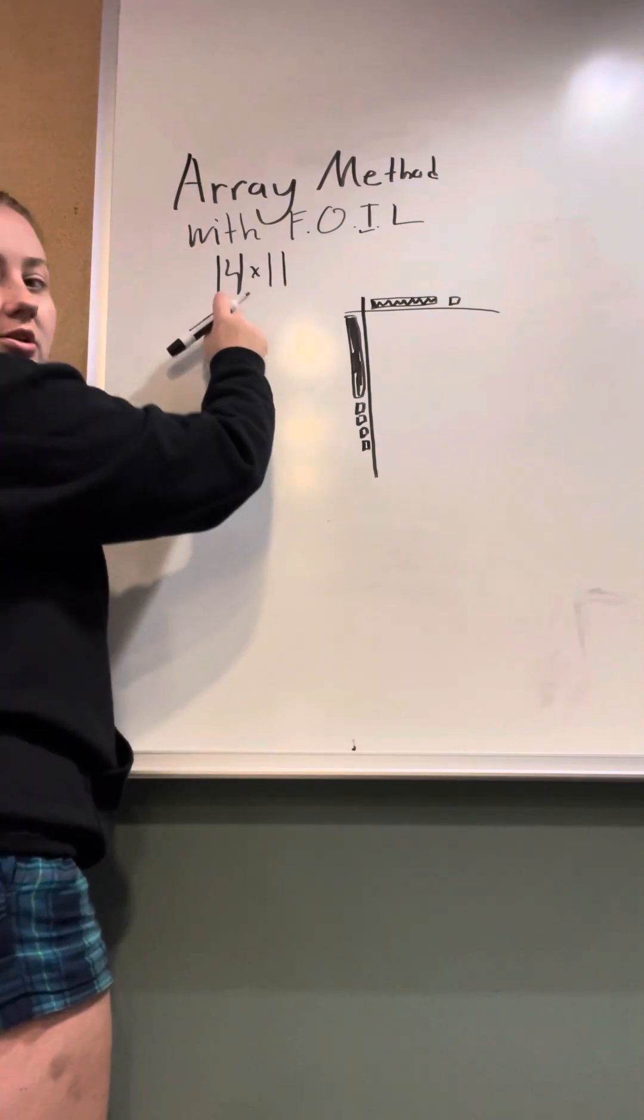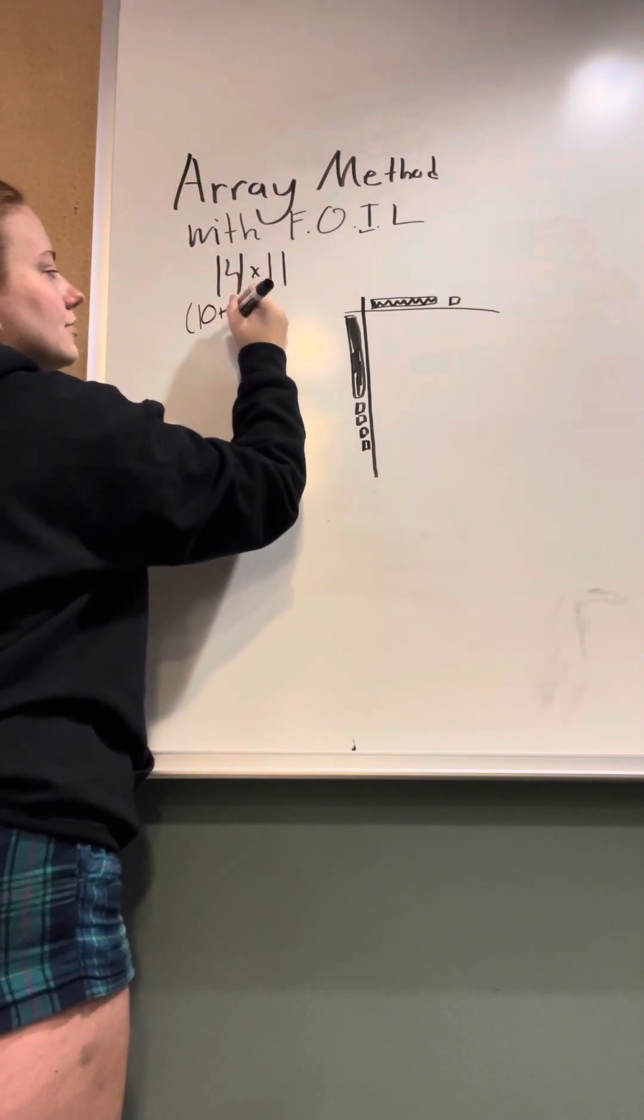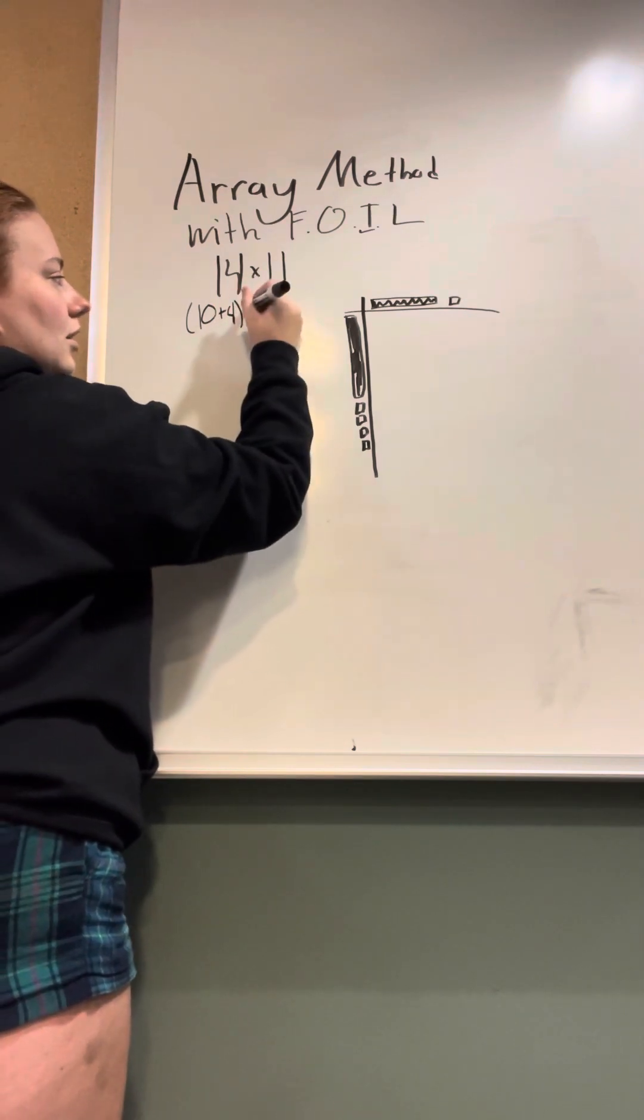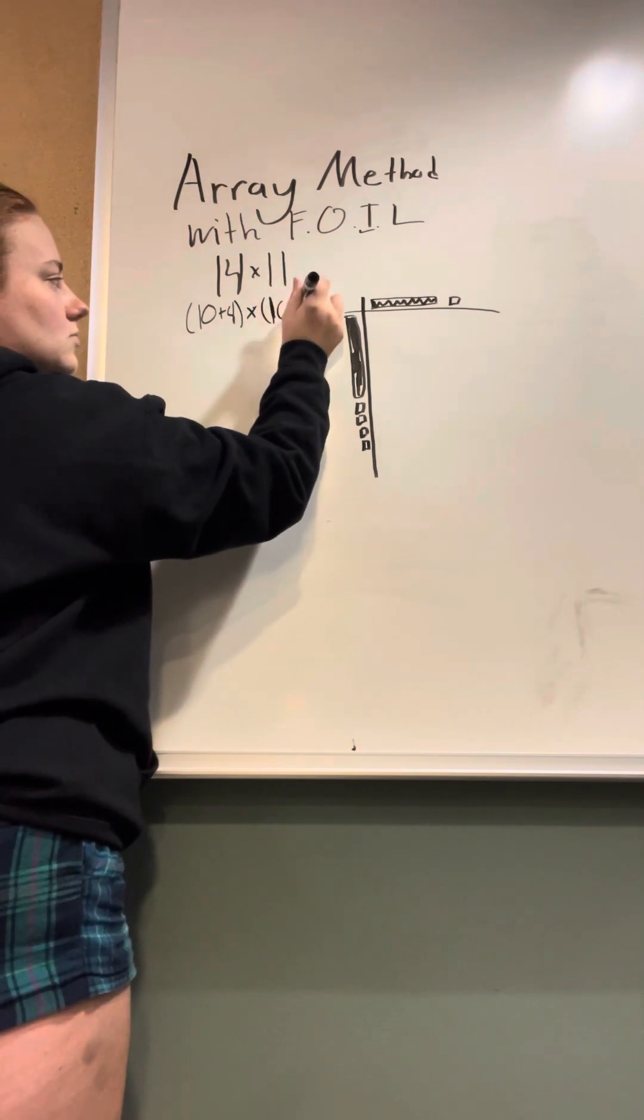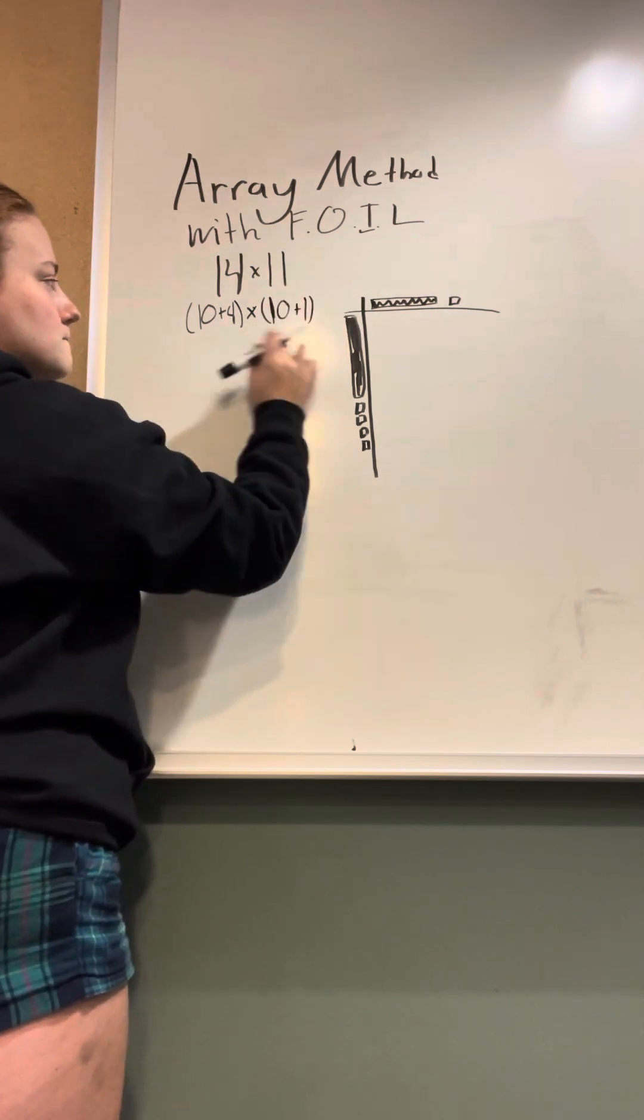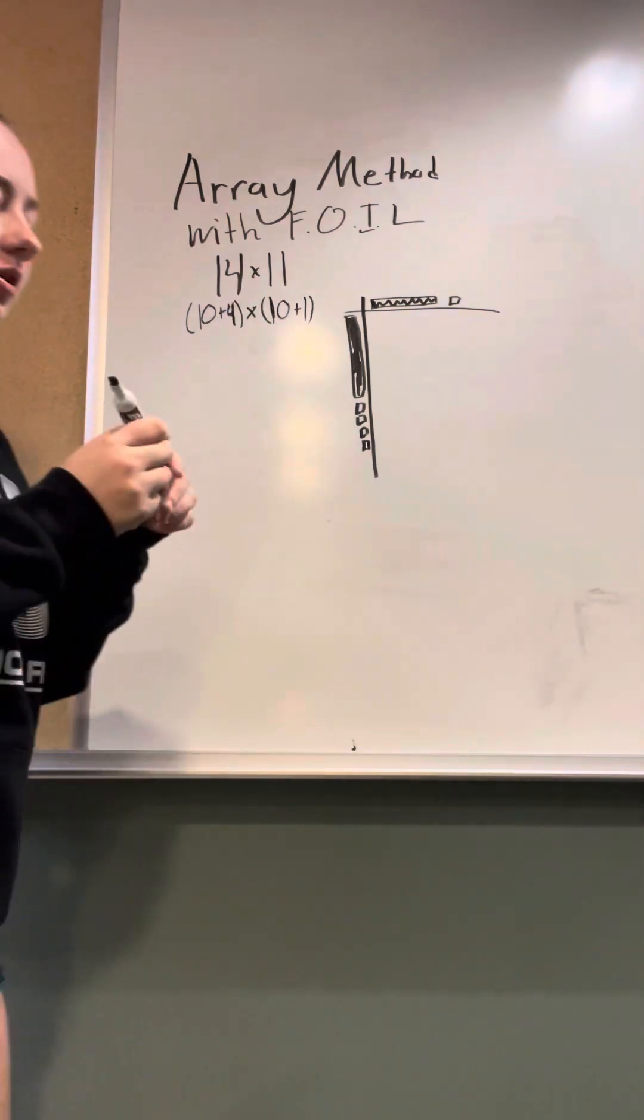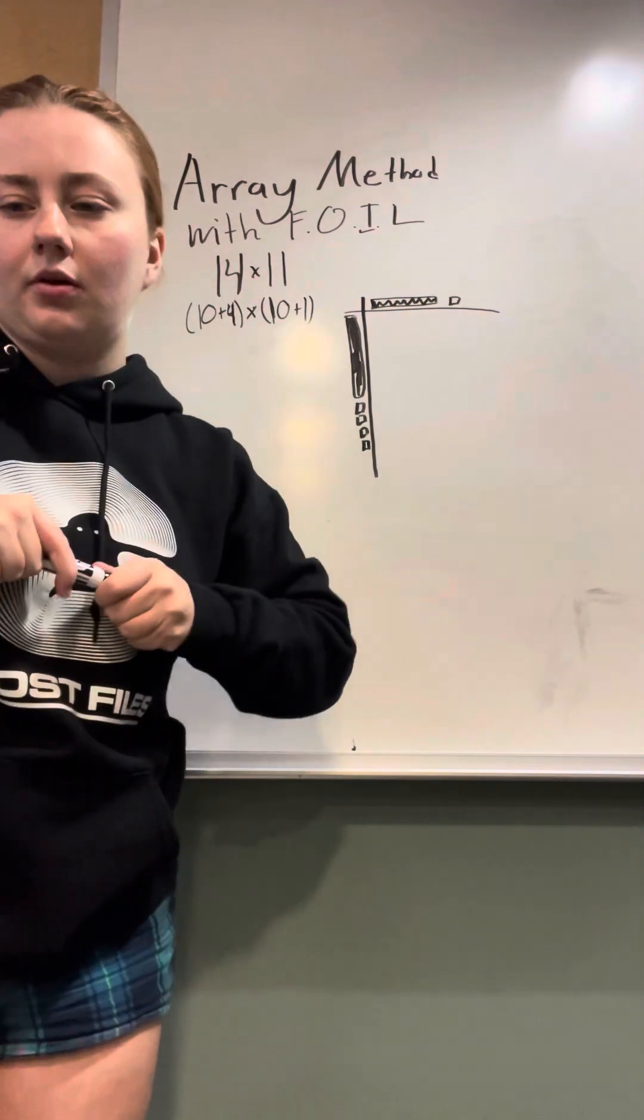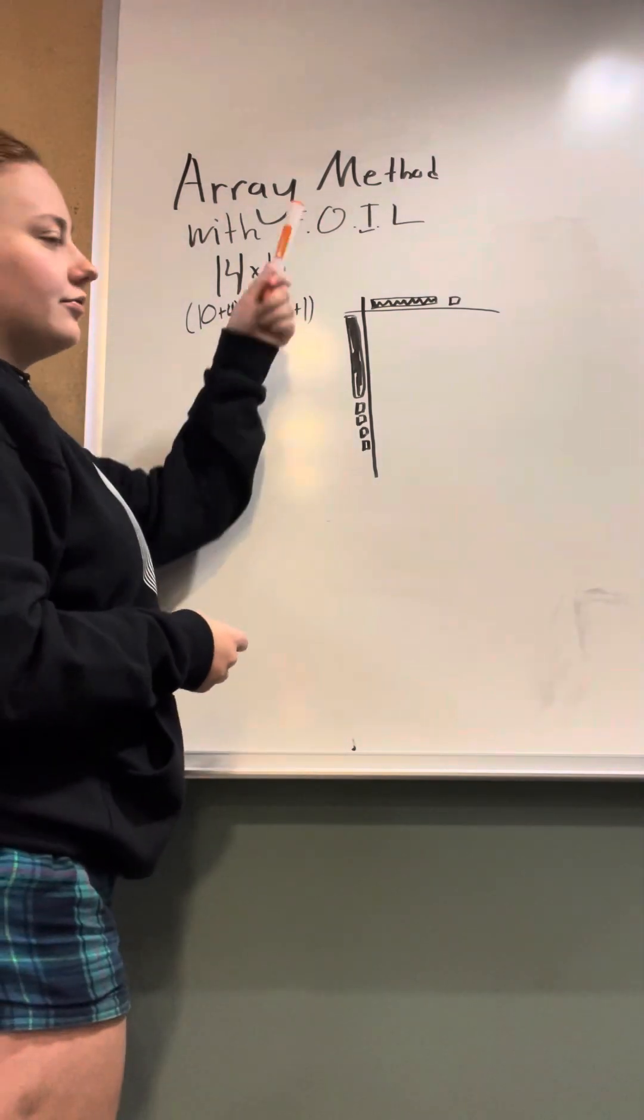So first thing we're going to break down is 14. We're going to break it down into 10 plus 4 in parentheses, and then multiply that times 11, which is going to be 10 plus 1 in parentheses. And then from here, we're going to start FOILing. So first thing is we're going to do F, which is front.